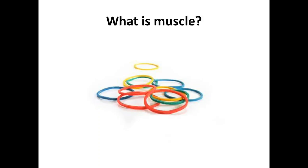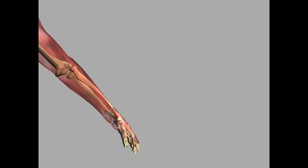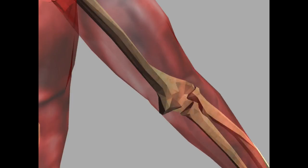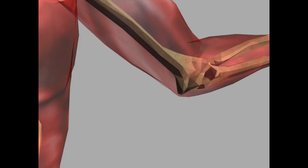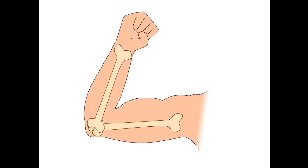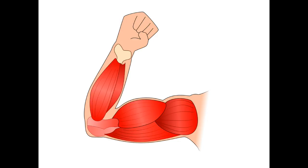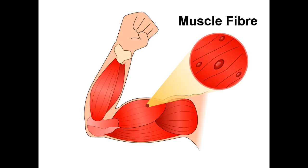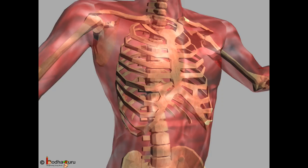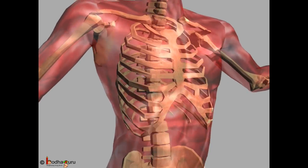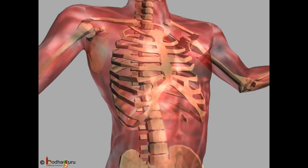Muscles are like elastic bands that help to move the bones. They help you to bend your arm. The swollen part inside your upper arm is the muscles. Bones are covered with muscles, and muscles are made up of bundles of fiber. The muscles cause movement — they help us move.